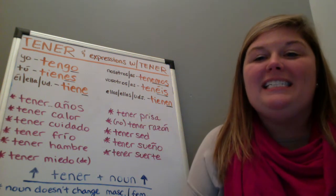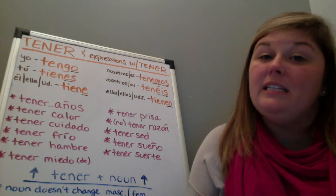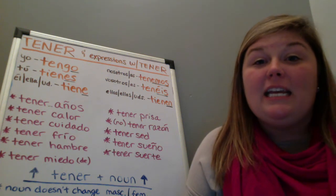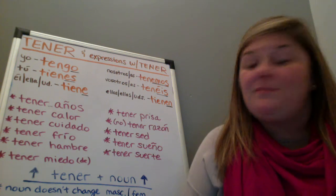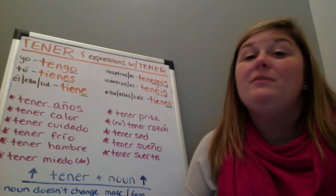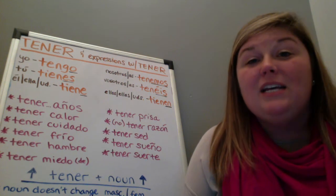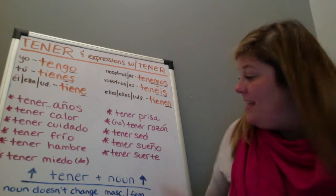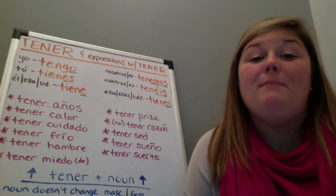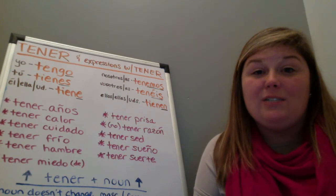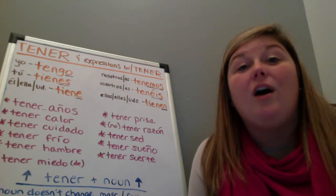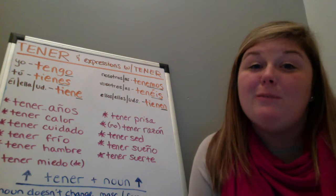Our next expression is tener sed, which means to be thirsty — literally 'to have thirst.' So 'I am thirsty' is tengo sed. Tener sueño literally means 'to have sleep,' but we would say to be sleepy. So 'I'm tired or sleepy' is tengo sueño. And tener suerte means to be lucky — literally 'to have luck.' So if you want to say 'you're really lucky,' you'd say tienes mucha suerte — you are lucky.